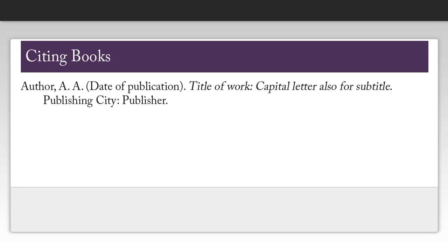When citing a book, you need to find the following information: the name of the author, the date of publication, the title of the book, the publisher, and the publishing city. One thing to note is the capitalization on the title of the book — you're only going to capitalize the first word of the title and the first word of the subtitle, as well as any proper nouns.